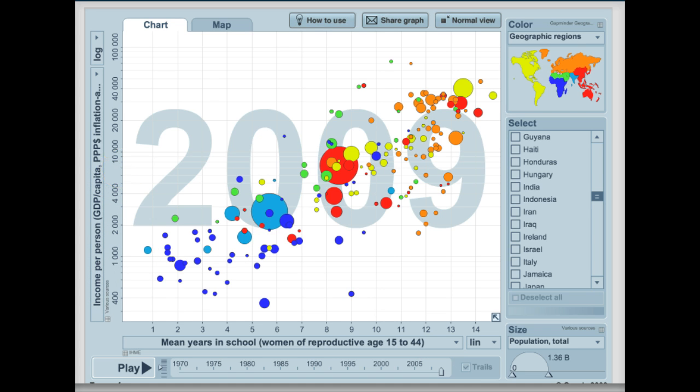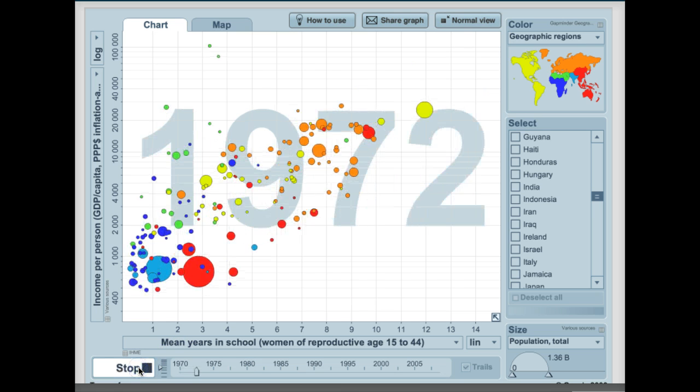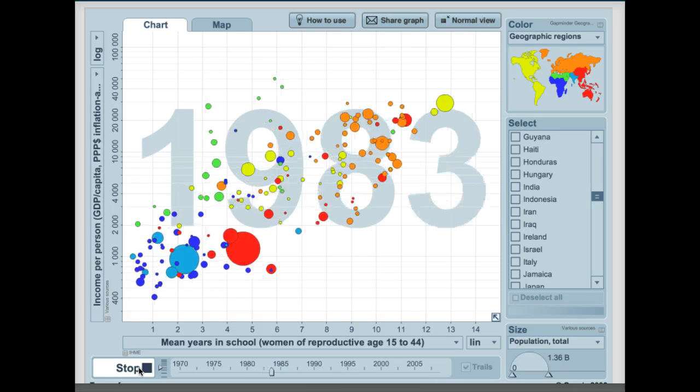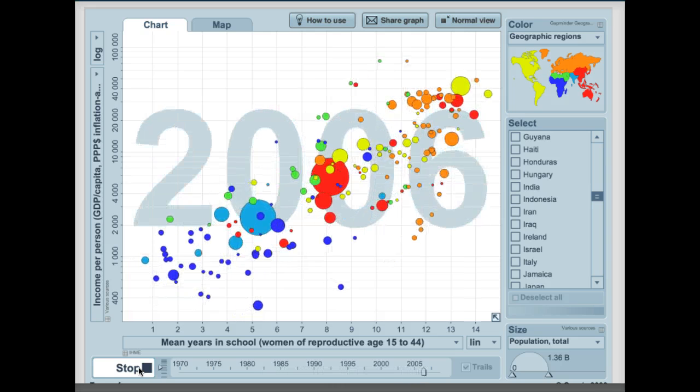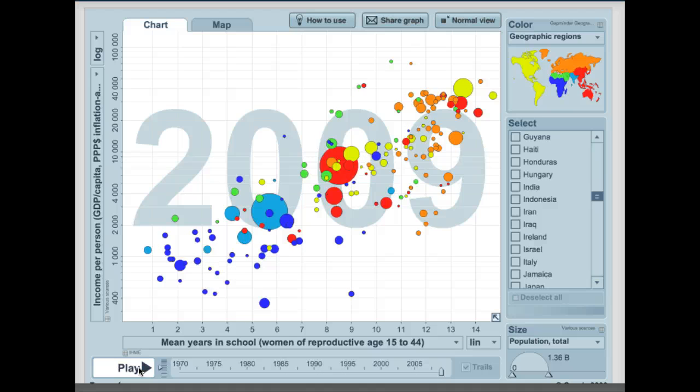So we put the mean years of school of women in here because we wanted to make it explain the income. And as you can see here, the mean years in school tend to increase the income over a bunch of years.